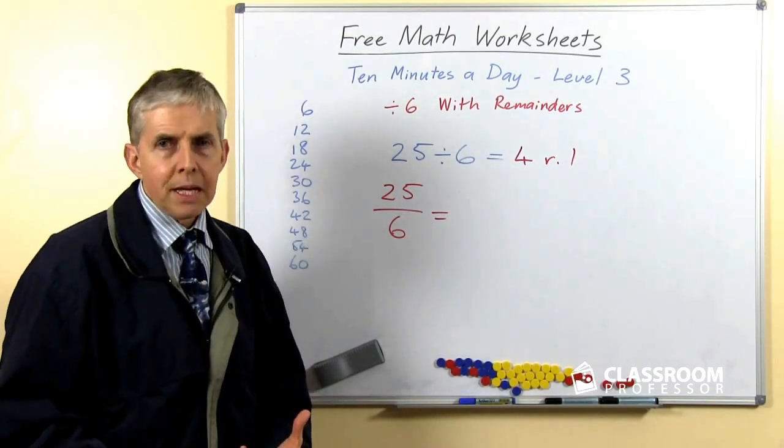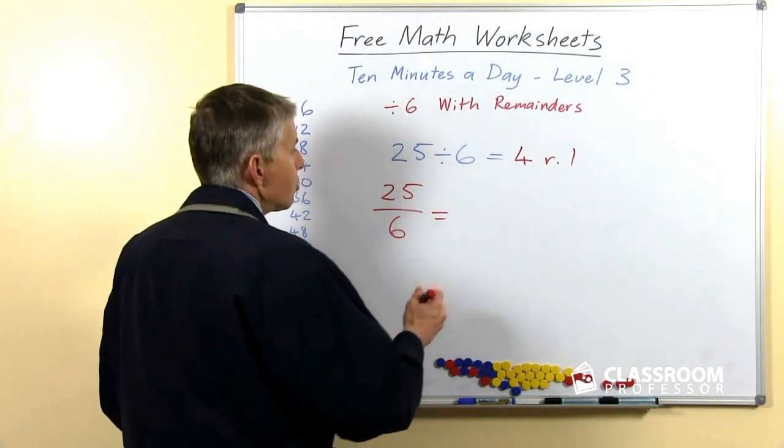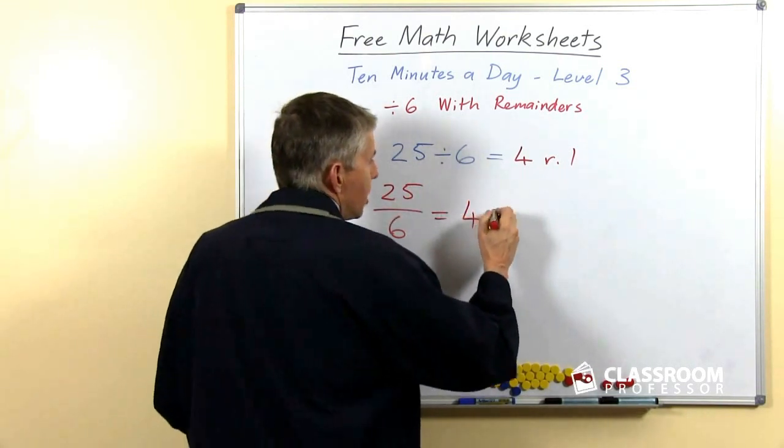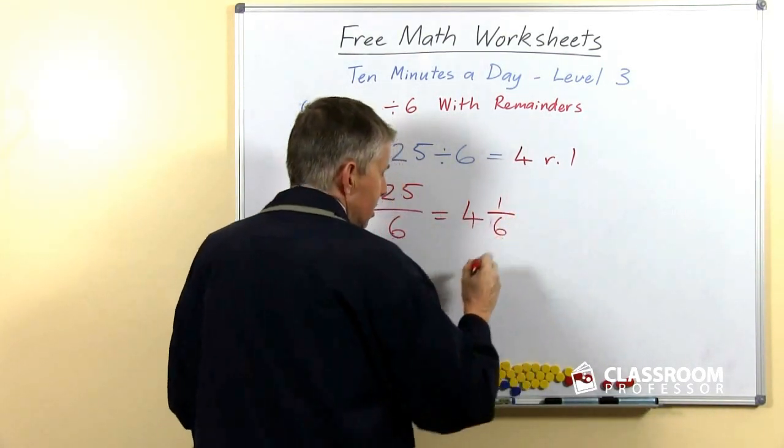25 sixths is the same as 25 divided by 6. What's the answer going to be? Of course it's going to be 4 wholes because 4 sixths are 24, and there's 1 left, and so as a fraction of course we write that as 1 sixth.